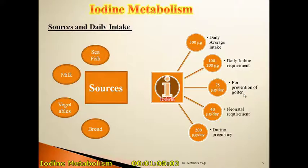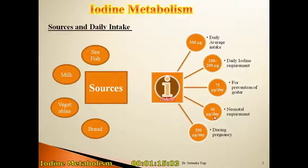For prevention of goiter, we need at least 75 micrograms per day of iodine. In the neonatal period, neonates require at least 40 micrograms per day. During pregnancy, the iodine requirement is around 200 micrograms per day.